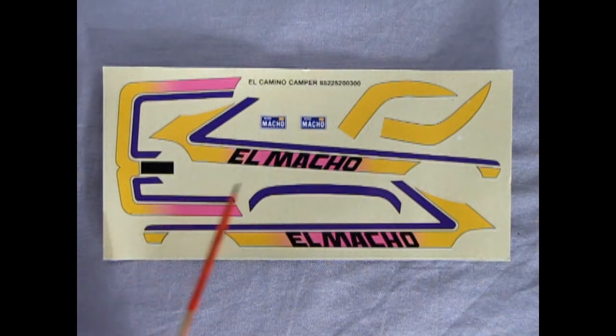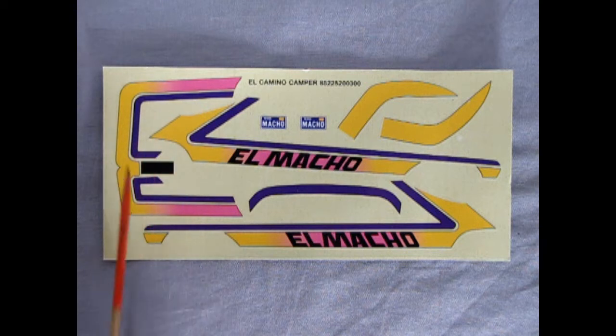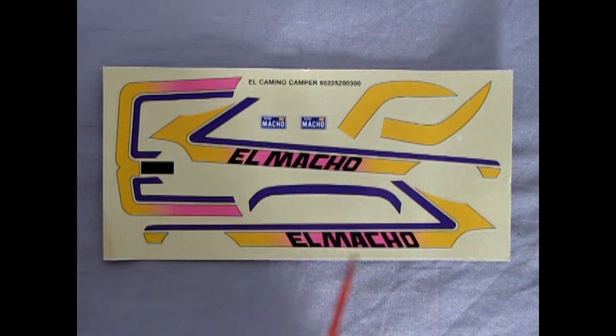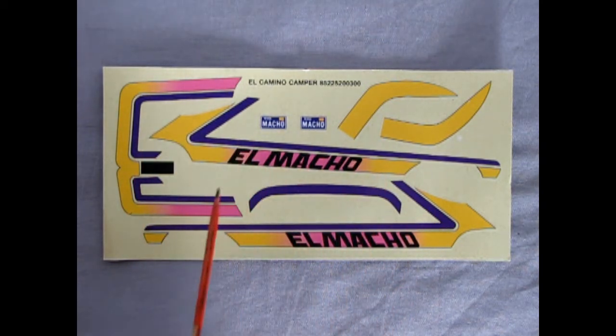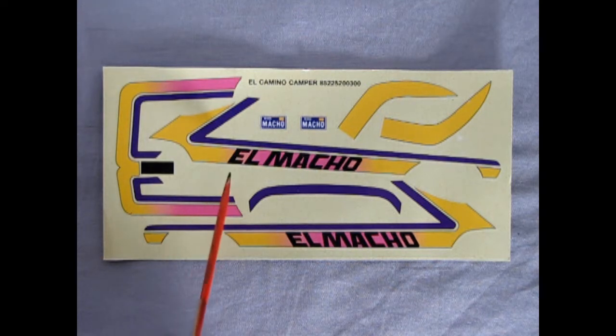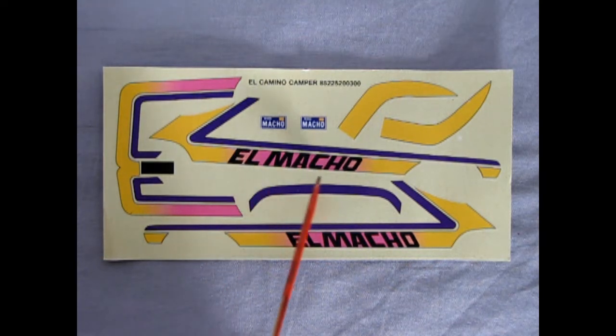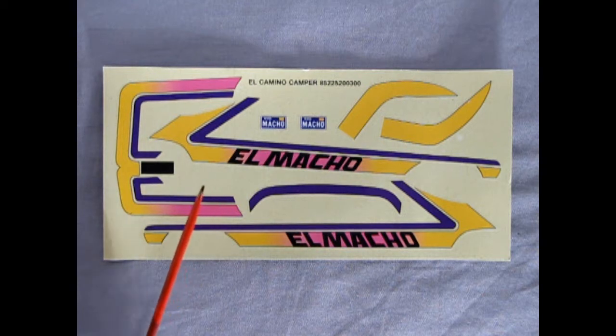Now here we have this really cool El Macho decal sheet on here, which has got the colors much like that Ford van we did a long time ago. Now what I find interesting with this is, the El Macho is black on here. But I remember in Trevor's decals, these were actually chrome right there, and on the El Macho.